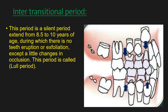The intertransitional period is the second stage of the mixed dentition. It begins when all permanent incisors and first permanent molars are fully erupted and ends when replacement of primary teeth starts in the buccal region. This is a silent period extending from 8.5 to 10 years of age during which there is no tooth eruption or exfoliation, with only little change in occlusion. It is also called the lull period.